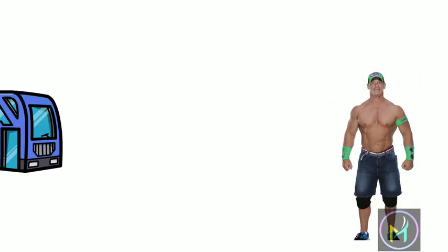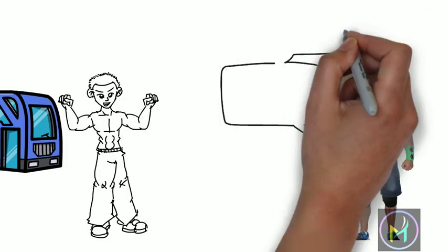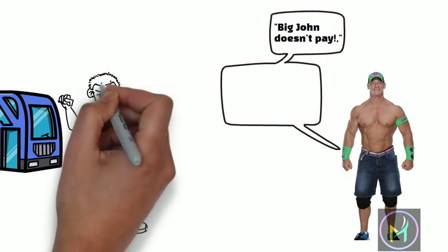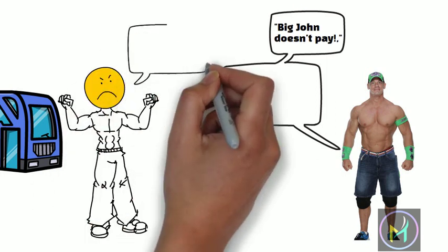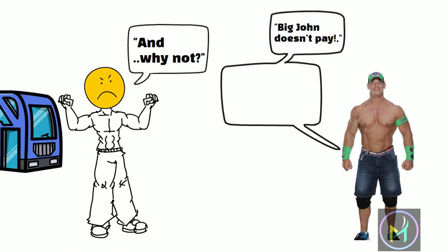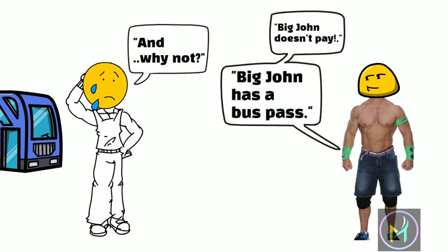So on the next Monday, when Big John once again got on the bus and said, Big John doesn't pay, the driver stood up, glared back at the passenger, and screamed, And why not? With a surprised look on his face, Big John replied, Big John has a bus pass.